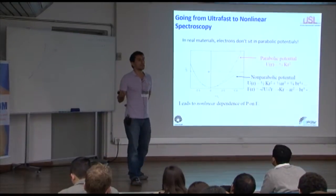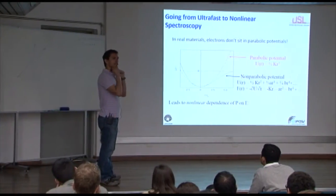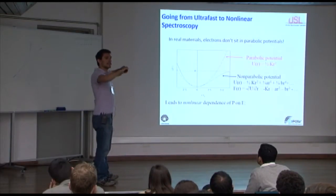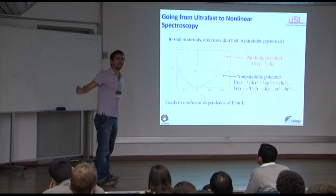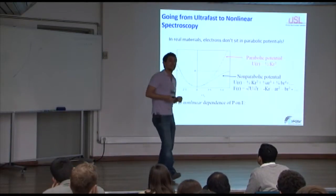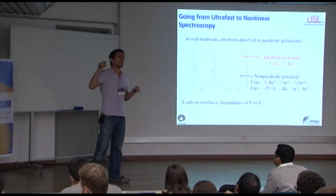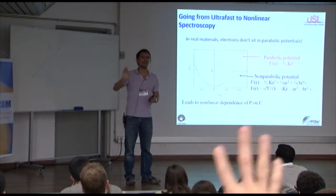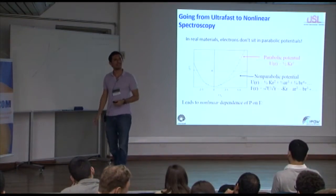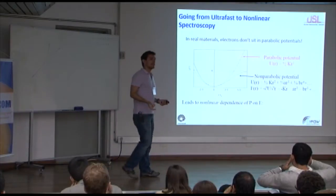Nonlinear optics reminds me of the story of a kid sitting on a swing with a dad pushing. If the dad pushes weakly, the kid swings at the same frequency as the dad pushes. But if the dad pushes really hard — boom — the kid goes way out, moving away from the nice parabolic potential. That's basically what happens in a material. With low power, the electron oscillates at the excitation frequency. But if you come with a huge amount of light, the electrons go crazy and light comes out at other wavelengths — you get interactions at other wavelengths.